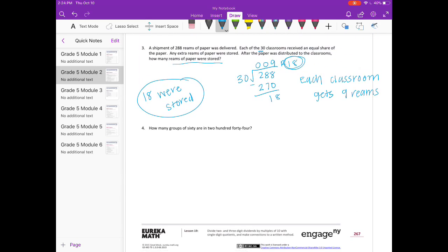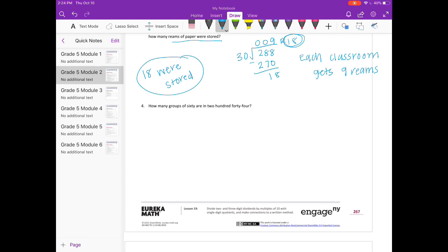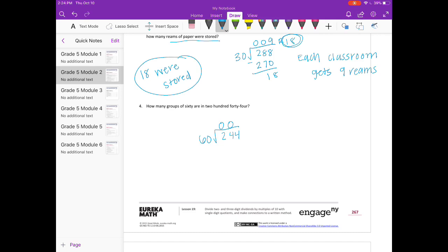Number 4. How many groups of 60 are in 244? So groups of 60 and 244. So 244 divided by 60. So 60 can't go into 2. It can't go into 24. 244. So 6 times 4 is 24. So that's as close as we can get. 6 times 40 would be 240. So we have 4 remainder 4. But only 4 whole groups of 60 can go into 244.